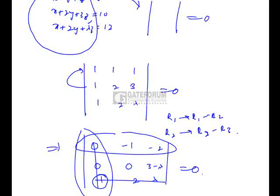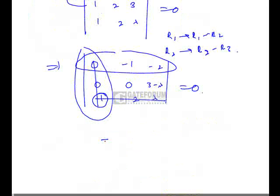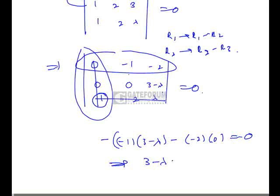So, if I expand along 1, it will be minus times of minus 1 into 3 minus lambda minus minus 2 into 0, that equals 0, which implies 3 minus lambda equals 0, which implies lambda equals 3, which is option A.